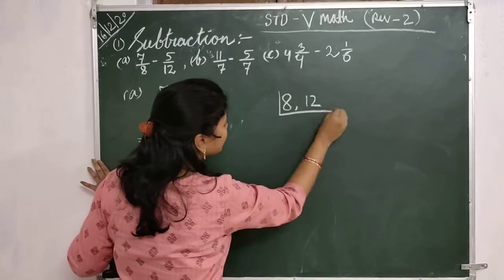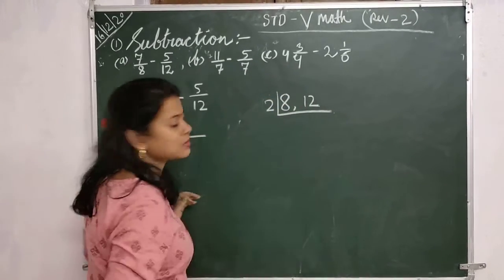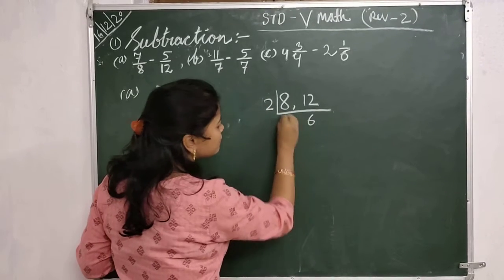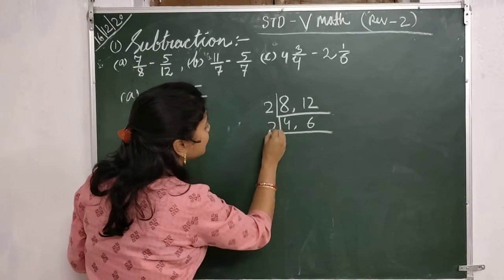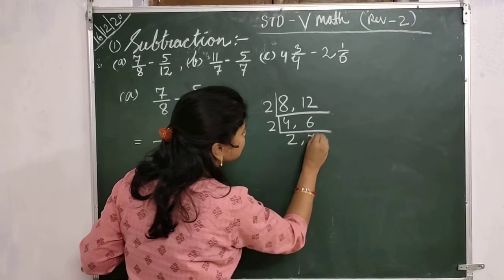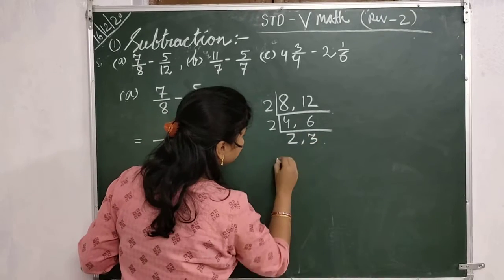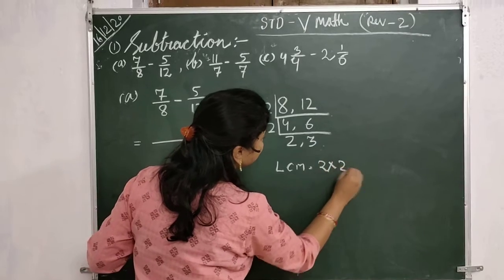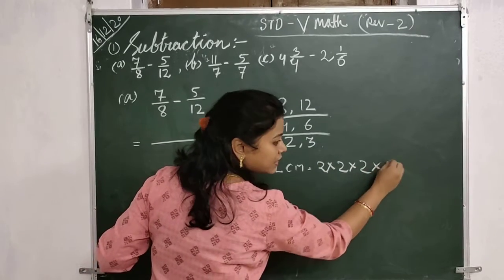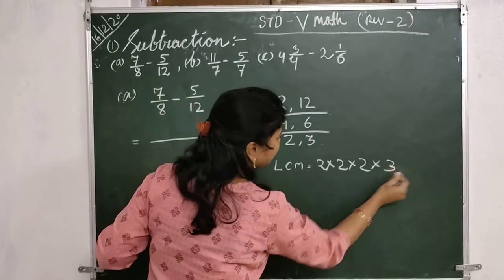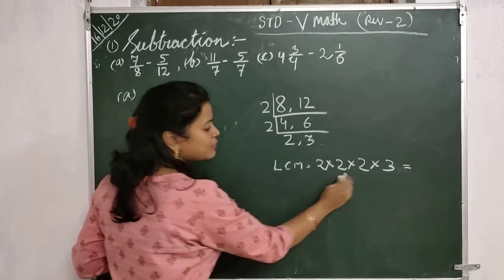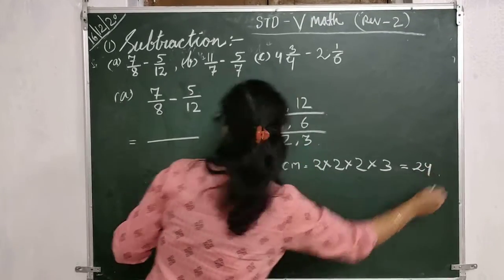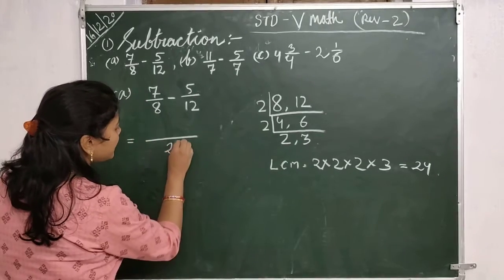I will take first 2 and divide them. 2 times 4 is 8, 2 times 6 is 12. Again I will divide them by 2: 2 times 2 is 4, 2 times 3 is 6. So here the LCM is 2 into 2 into 2 into 3, equal to 4 times 2 is 8, 8 times 3 is 24.